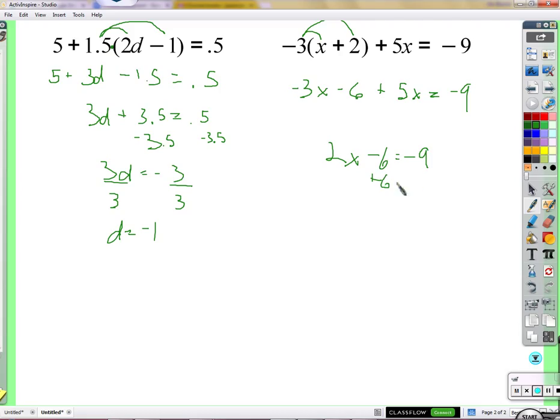We'll add 6 to both sides. Getting 2x equals negative 3. And we'll divide by 2. x equals negative 3 halves. Or negative 1.5, but we're not afraid of fractions, so we can leave it as x equals negative 3 halves.